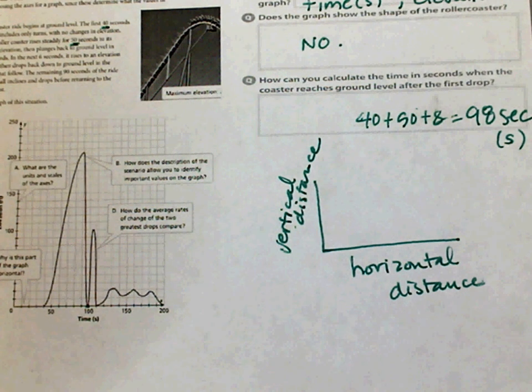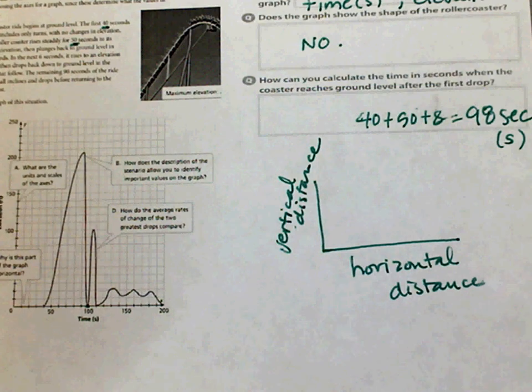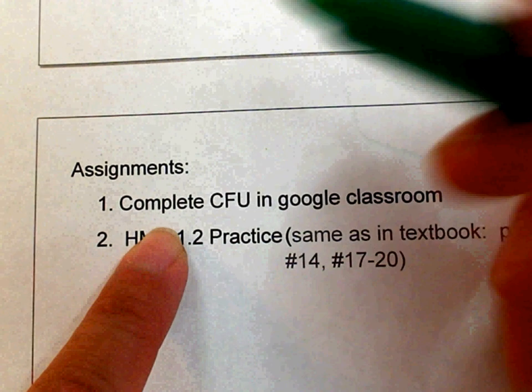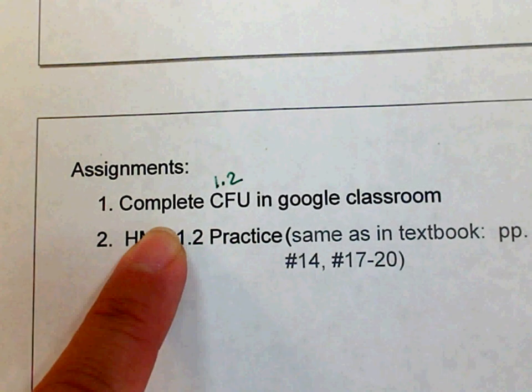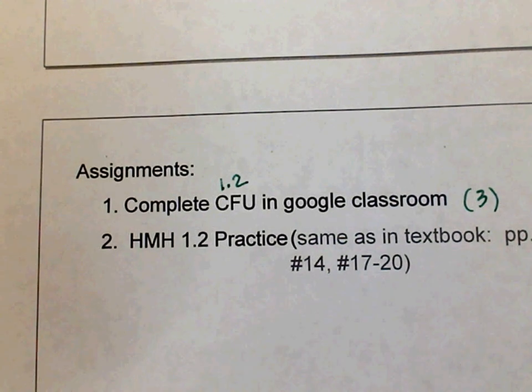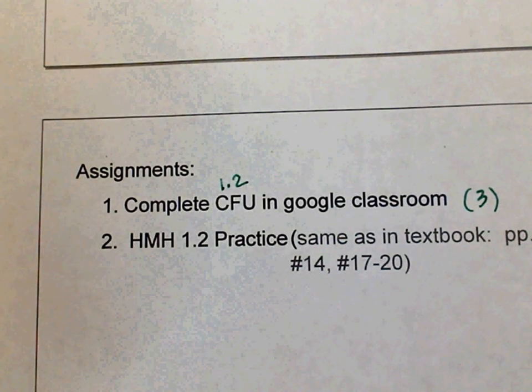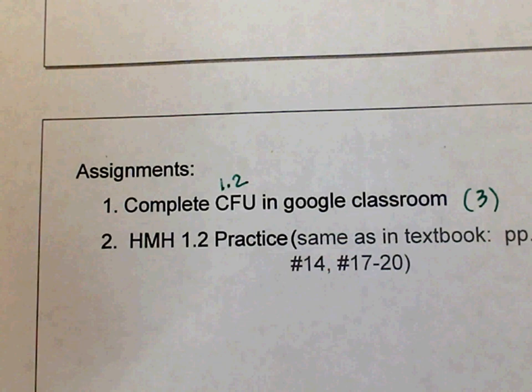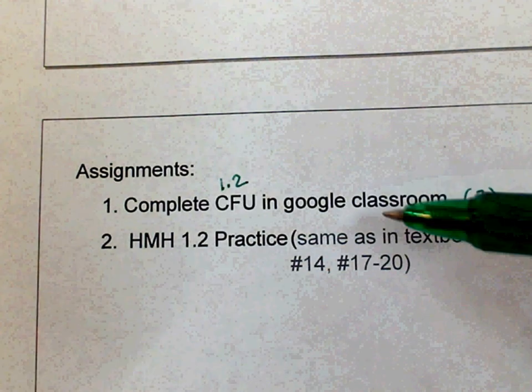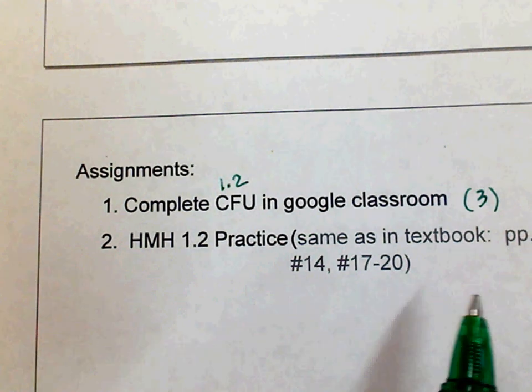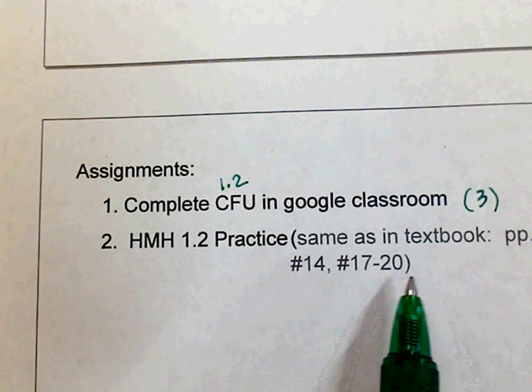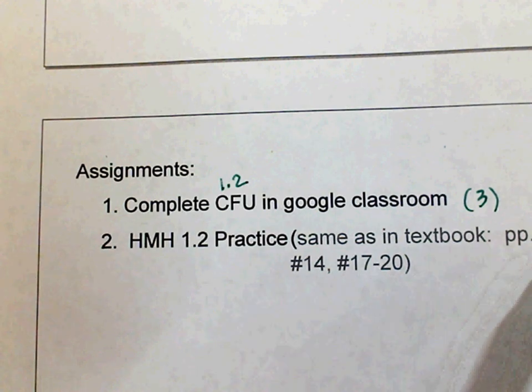Basically you're just analyzing graphs, figuring out what is happening with the graph today. Your assignment is you need to complete the 1.2 CFU in Google Classroom. There's only like three questions. Try to do your best. I just want to know if you understand what's happening in the graph, because this leads you into the next lesson, which is transformation. When you get done, this is the assignment. Actually what I did was I made a paper copy for you. But if you want to see how it correlates, these are the numbers: number 4 through 10, number 14, and 17 through 20.